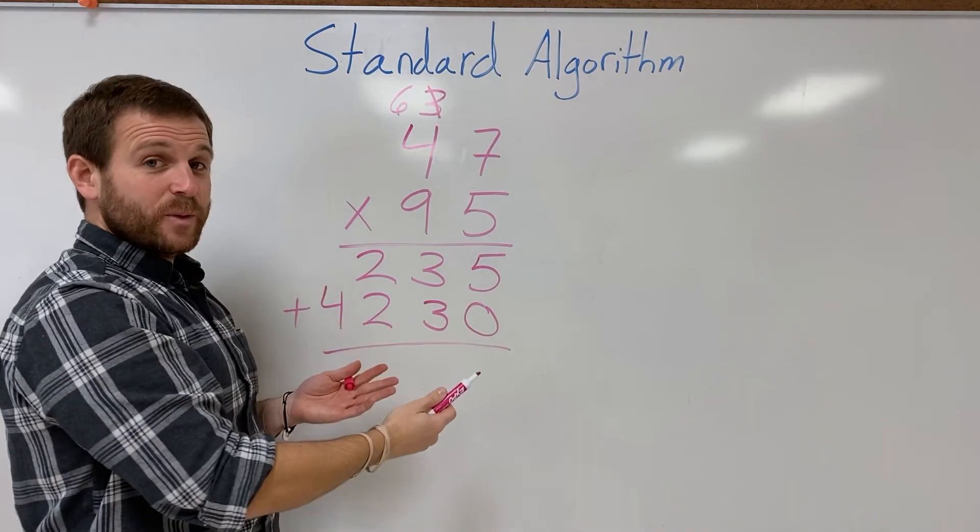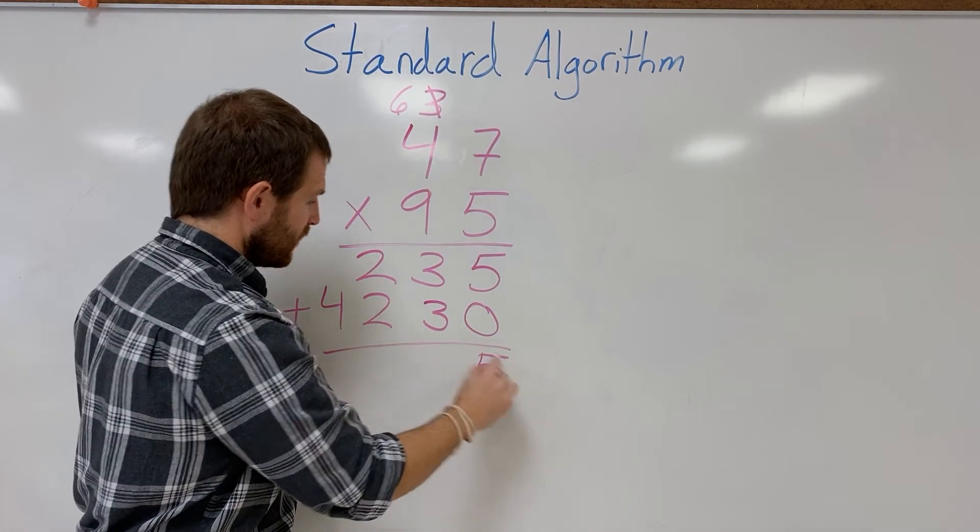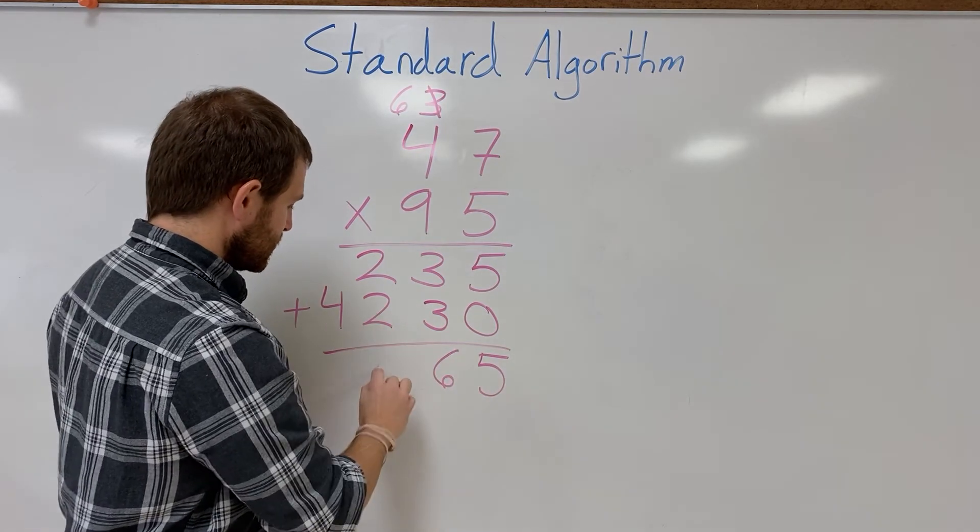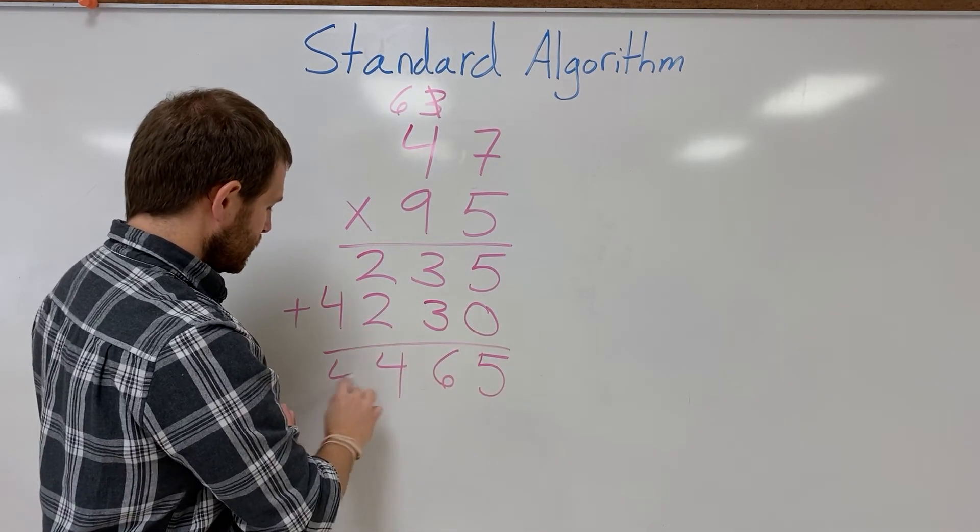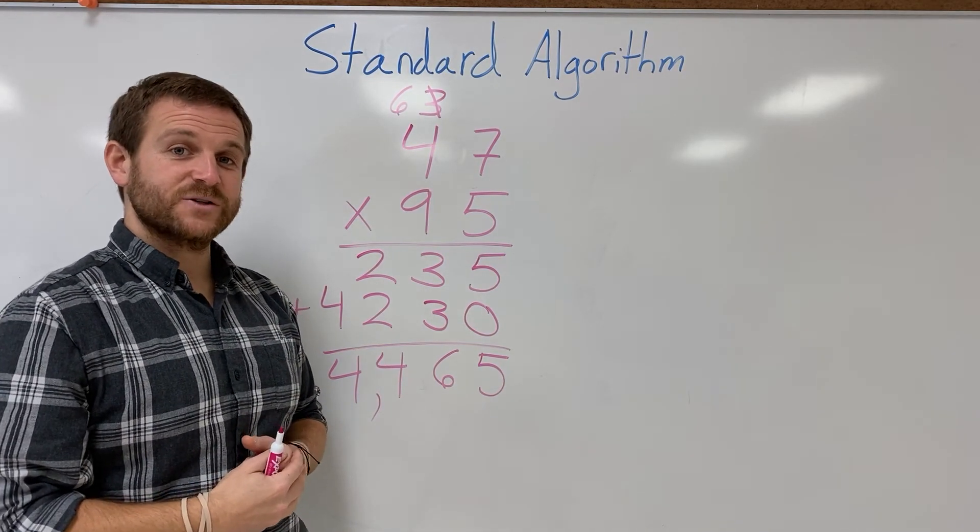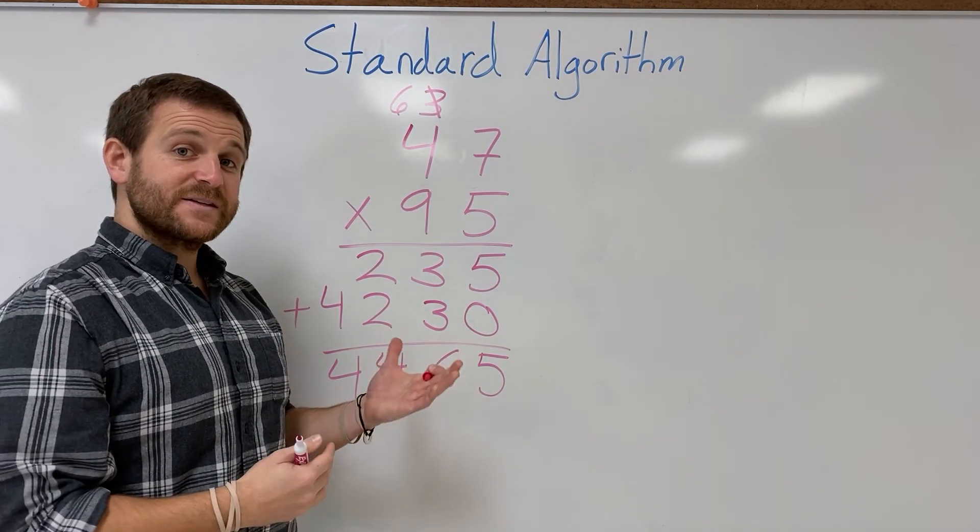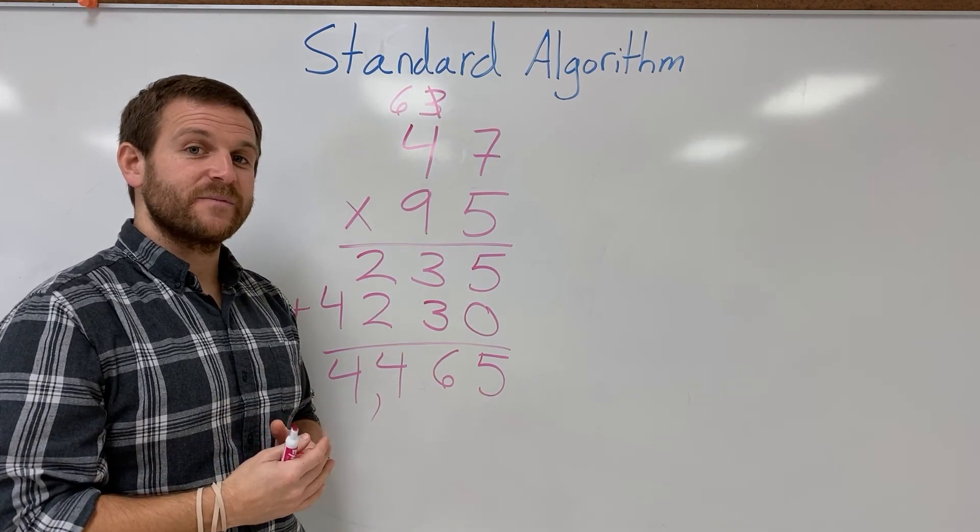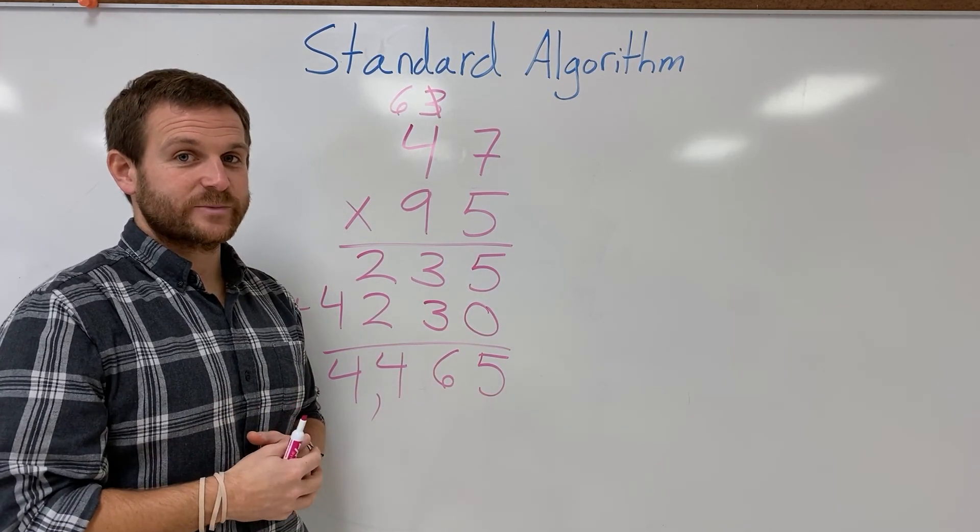I have my two partial products. I add them together: 5, 6, 6, 4, and 4 for a total of 4,465. This is another example of how to use the standard algorithm for double-digit times double-digit multiplication.